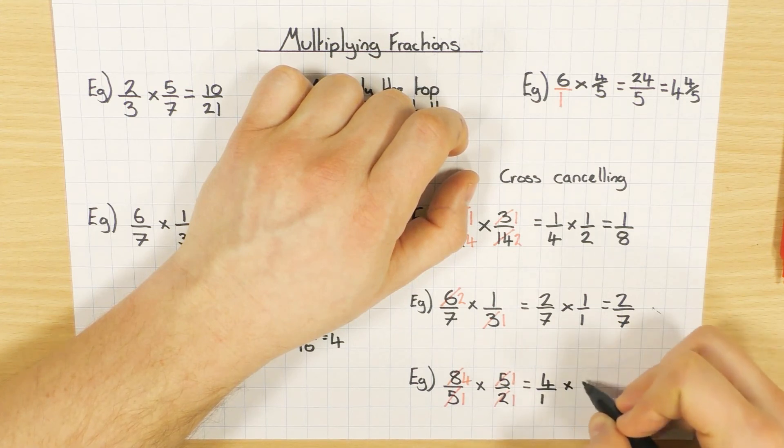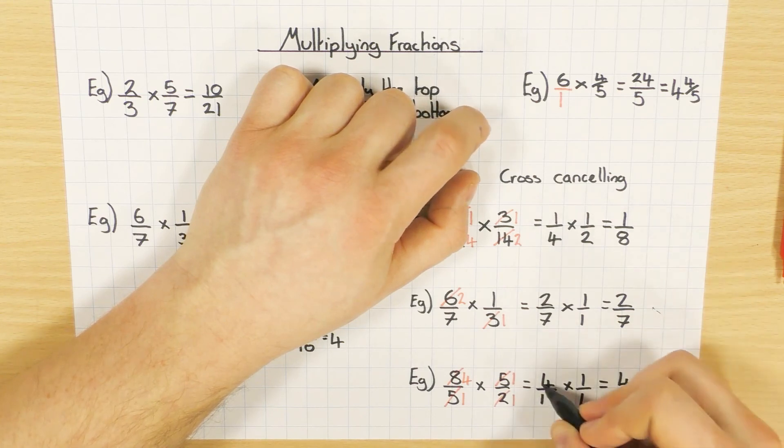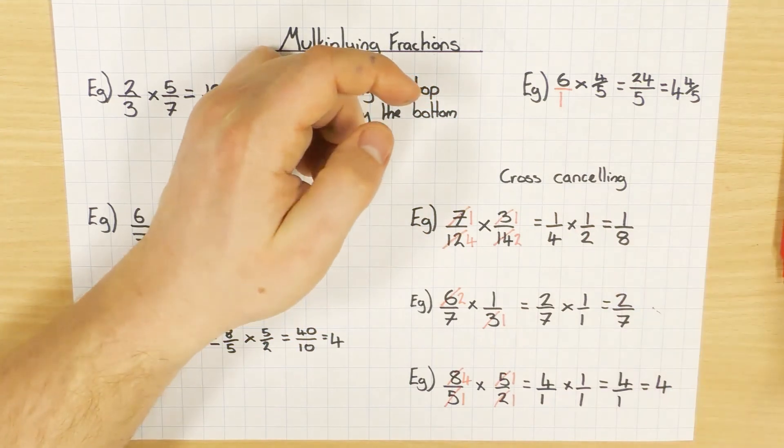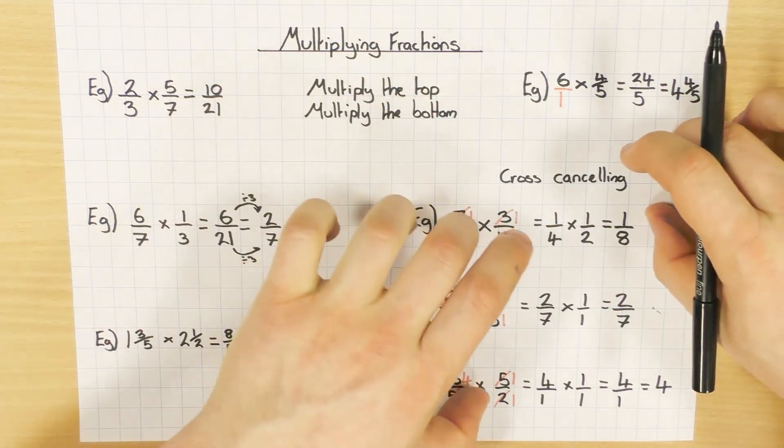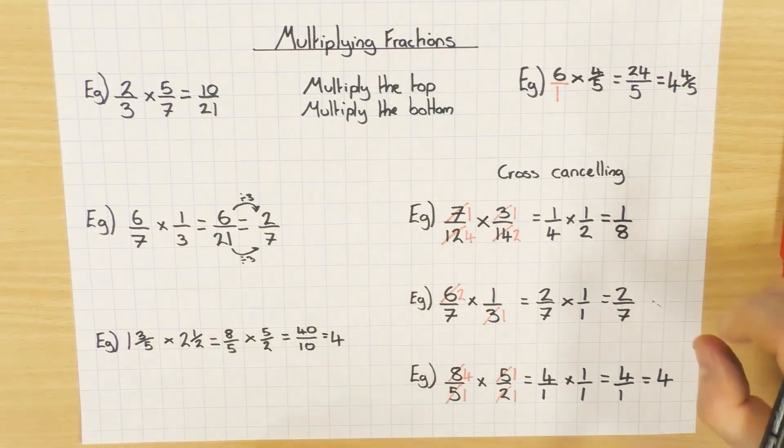So 4 over 1 times 1 over 1. Really easy there. 4 times 1 is 4, 1 times 1 is 1. And again, 4 divided by 1 is 4. So it's just another little thing that you can do to help you simplify at the start, where the numbers are a little bit easier to work with, as opposed to doing it at the end.